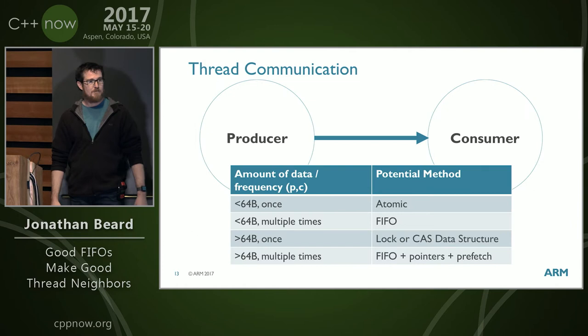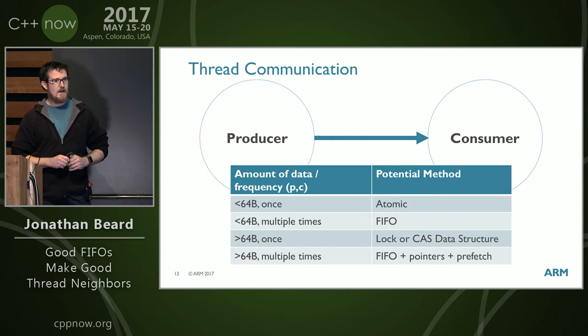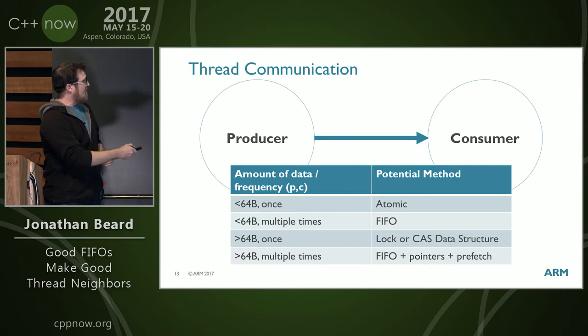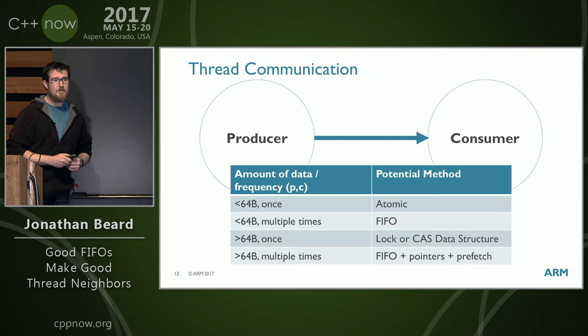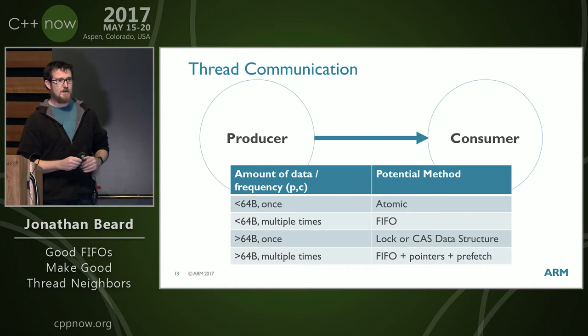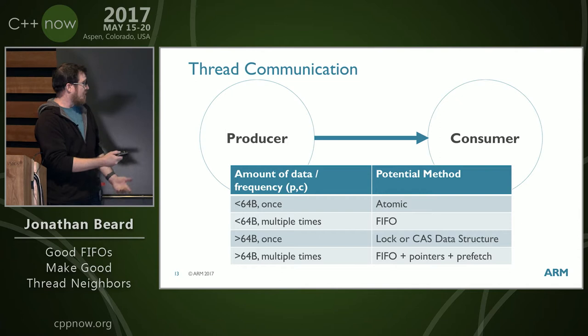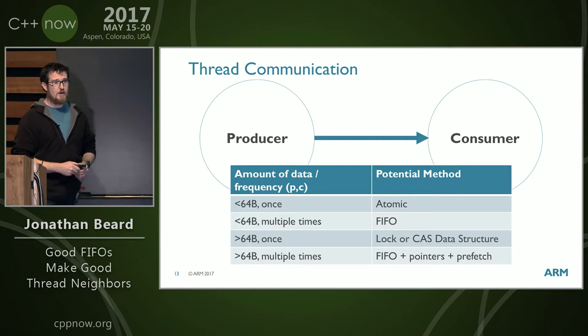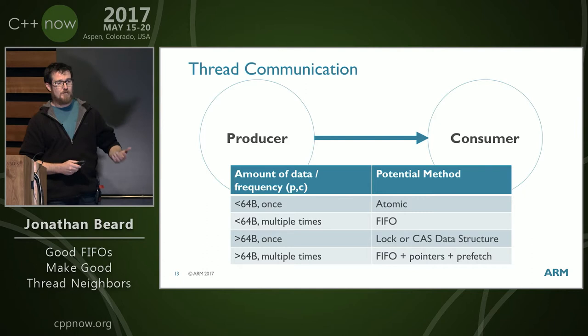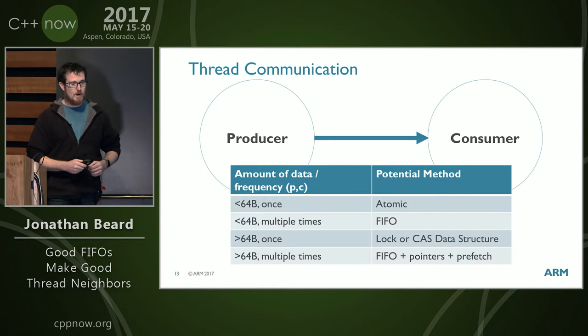Bottom line up front — in case anybody wants to sneak out: I have a chart with a dichotomy of message sizes and the appropriate action. We have amount of data and frequency. I've picked 64 bytes — the most commonly used cache line size for almost every architecture; IBM uses 128. If you're only going to send once, use atomics. Multiple times, FIFOs work. Greater than 64 bytes, use locks or compare-and-swap data structures. For multiple times with large data, you go to lock-free FIFOs or compare-and-swap with pointers.